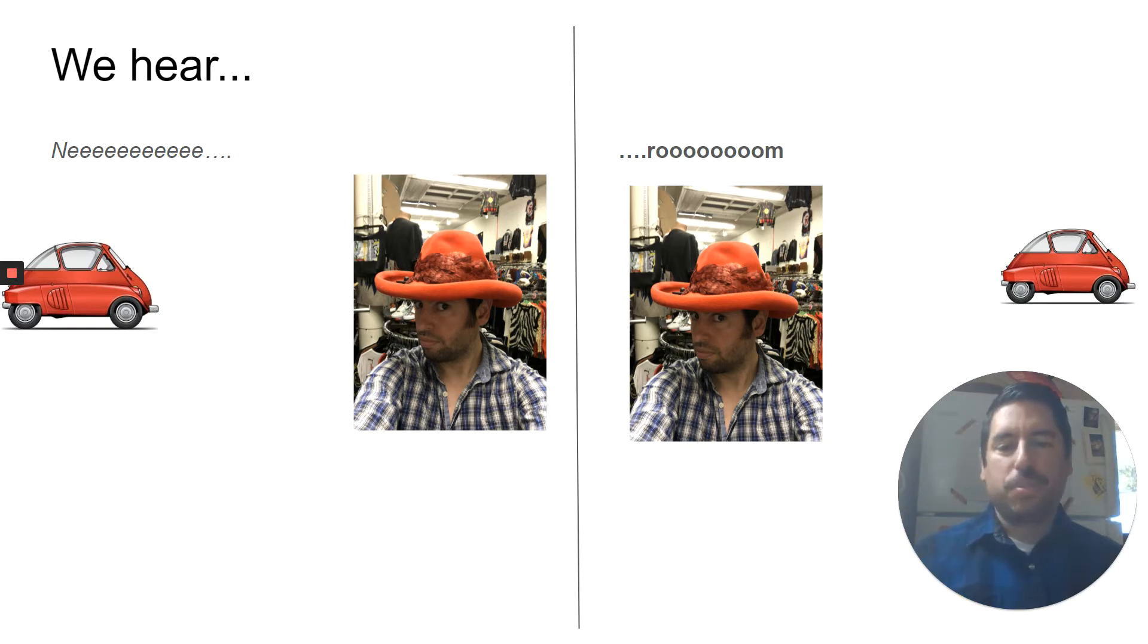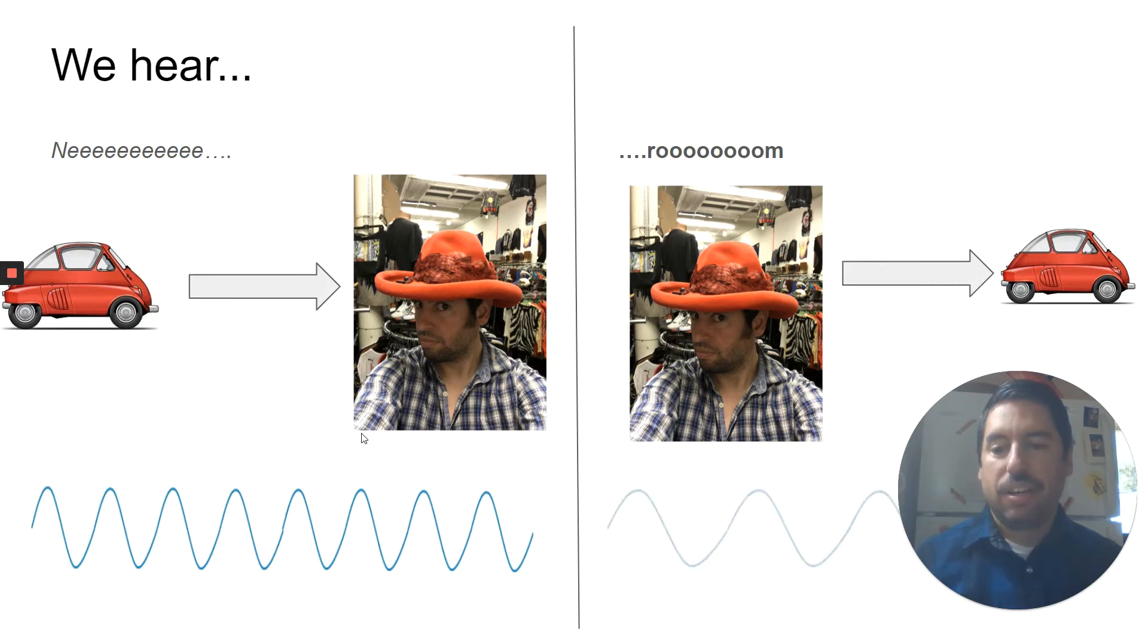So as it's coming towards me, it's meee, it's higher pitched. And as it passes, you hear the. And it's lower pitched. So coming towards you, there is a higher frequency. All right. After it passes you, there's a lower frequency. So the sound wave is actually changing as the car passes you.